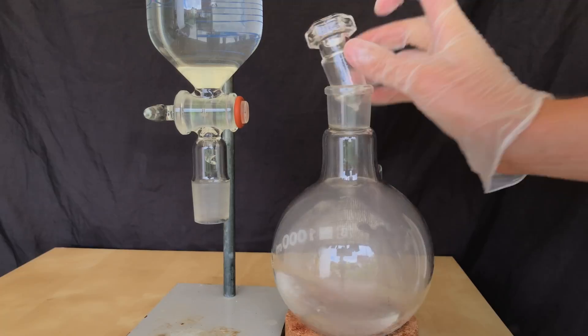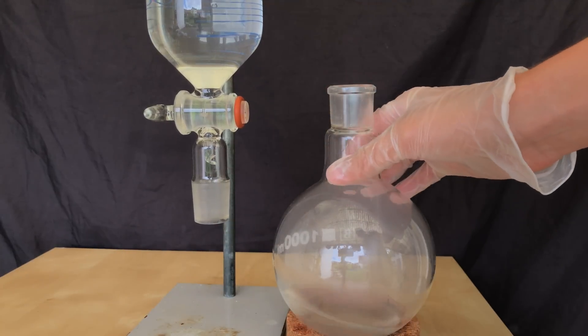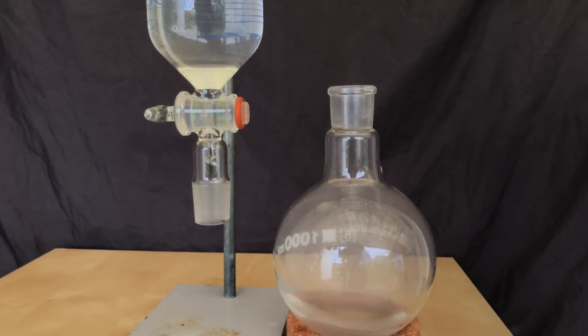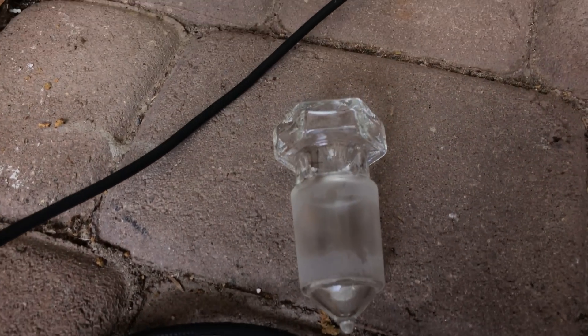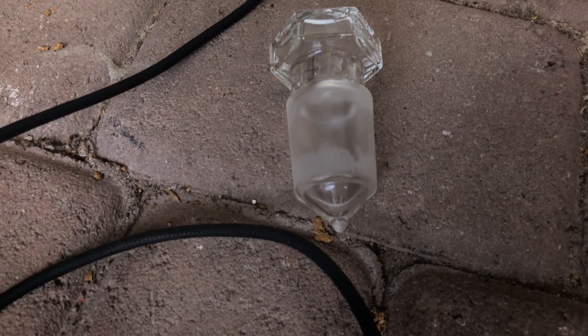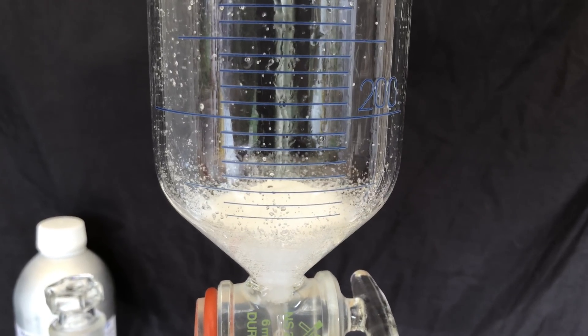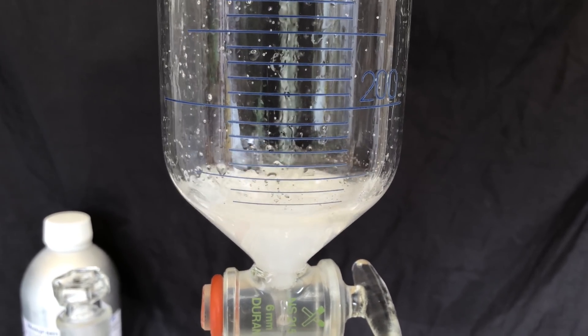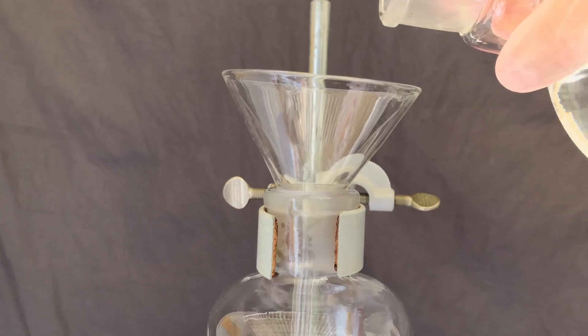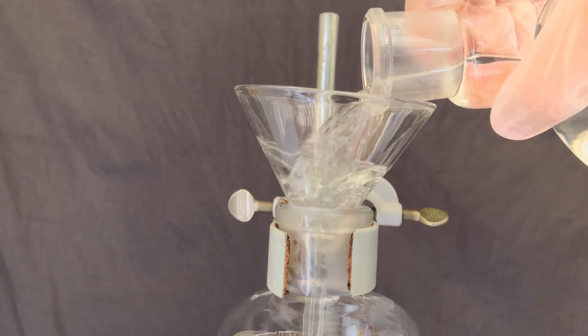I rinsed the round bottom flask with ether and this happens: ether has a high vapor pressure and it propels the stopper out of the flask. Fortunately, it survived the brutal fall onto the ground. The water layer was washed three times using 500 milliliters of MTBE in total. The combined ether layers were then washed one time using saturated sodium chloride solution. This washing step should dry the ether layer even further while also removing some contaminants.